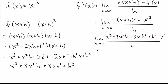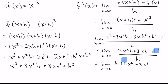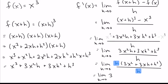Now we see that on the top some things can cancel — the x cubed and the negative x cubed cancel — leaving us with 3x squared h plus 3xh squared plus h cubed, all over h. The strategy now is to factor an h out of the top so we can cancel it. There's an h in all of those terms, so we factor it out. That h on top and bottom cancel, and we end up with 3x squared plus 3xh plus h squared.